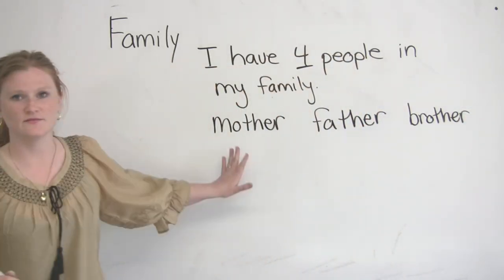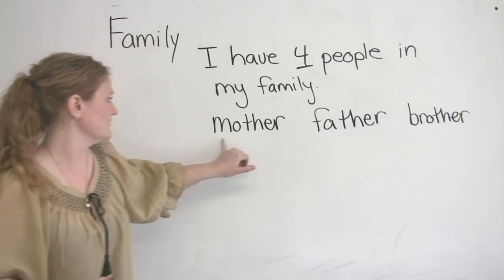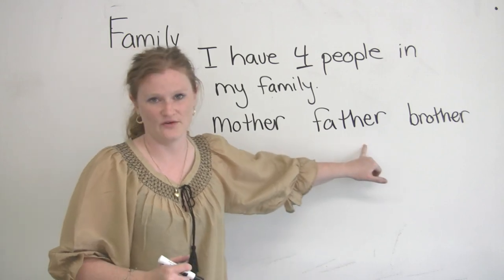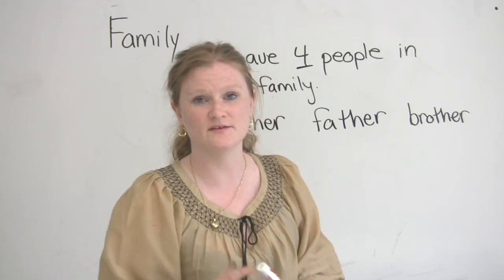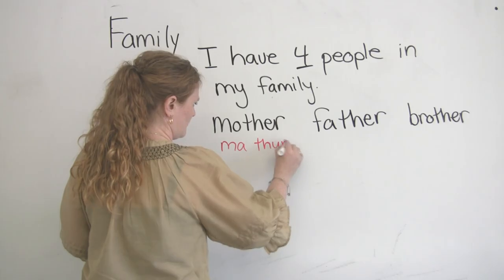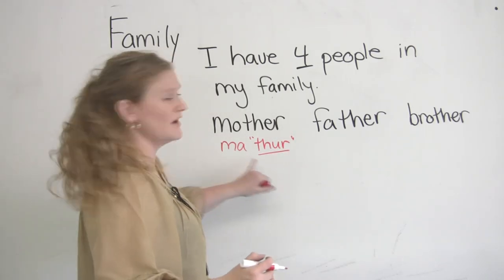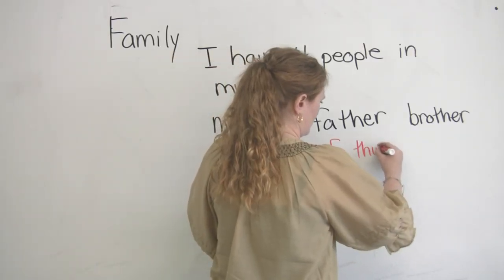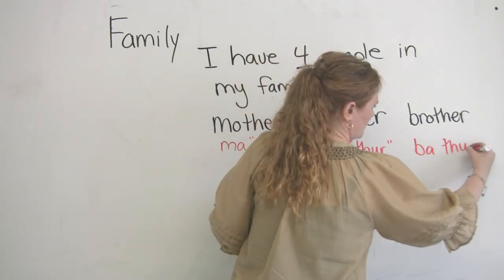The pronunciation of these three words all end the same way. The first one is mother, then we have father, and brother. I'll just write the pronunciation of these in red for you. So these are all going to sound like 'thur' — so this is 'ma-thur,' 'fa-thur,' and 'bra-thur.'